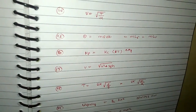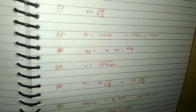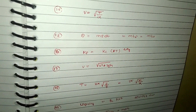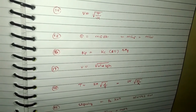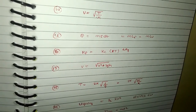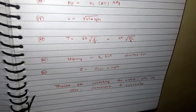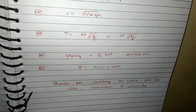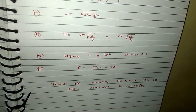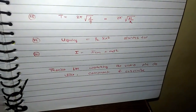v = √(u² + 2gh). Time period: T = 2π√(l/g); for spring T = 2π√(m/k). Spring energy = ½kx² — always positive. Parallel axis theorem: I = I_cm + md².